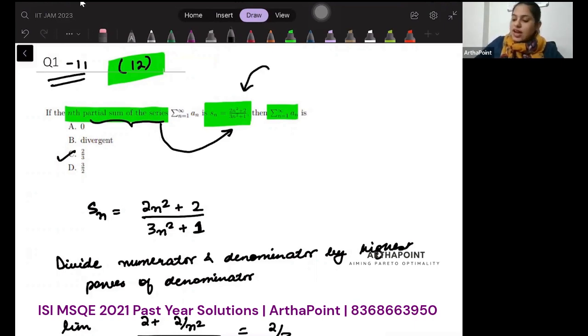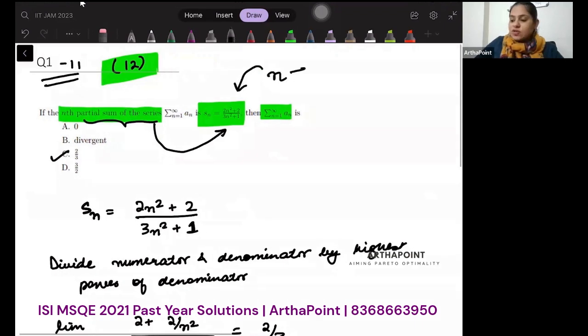So you just have to check what happens when n tends to infinity. And whatever answer you get there, that would be the sum of this series as n goes from 1 to infinity. Very simple.